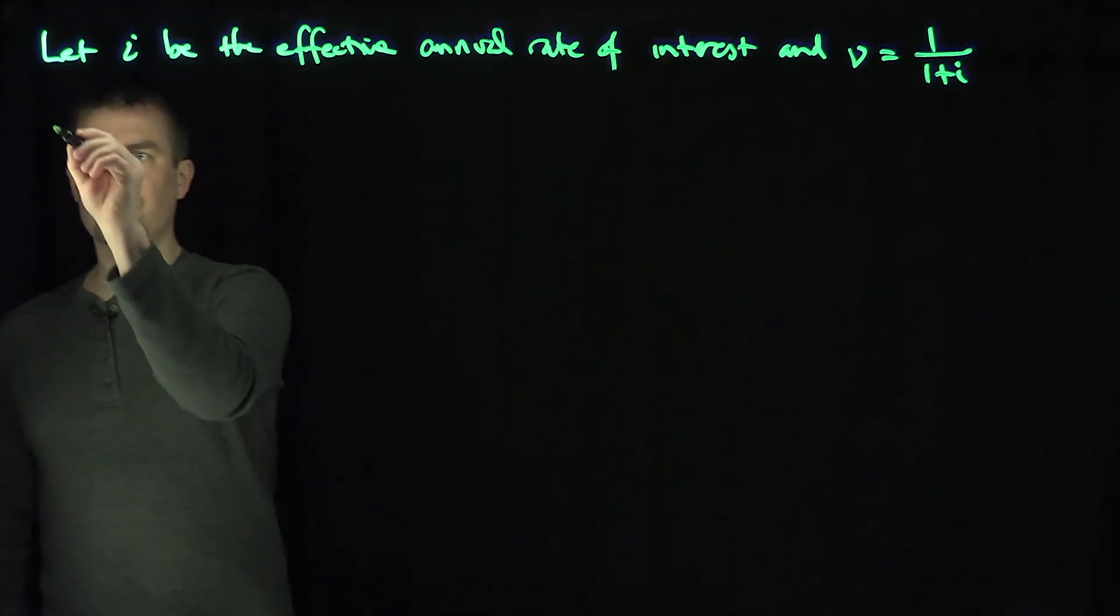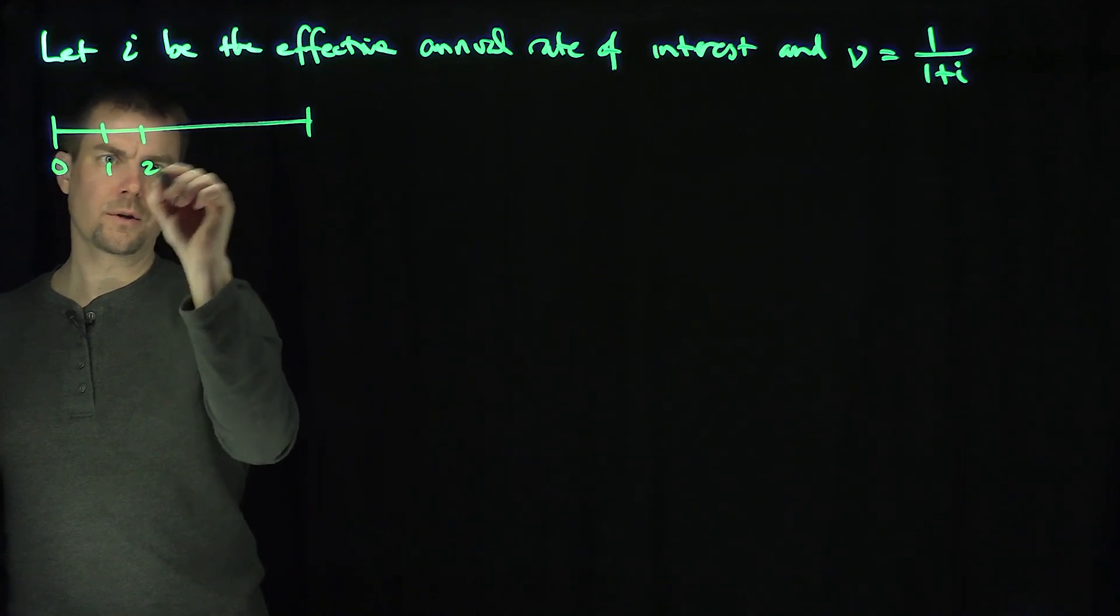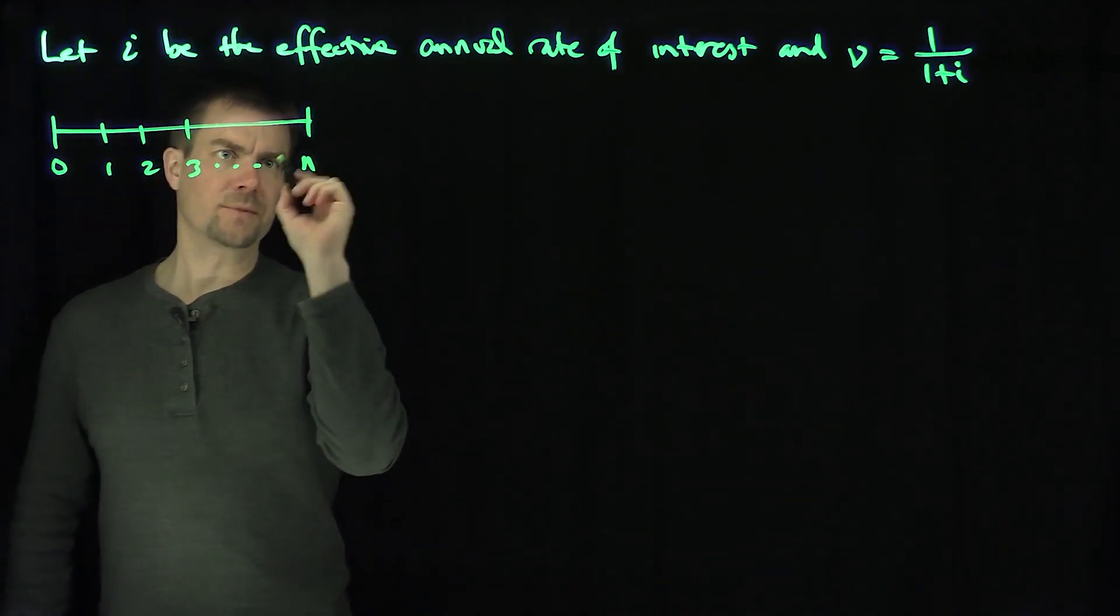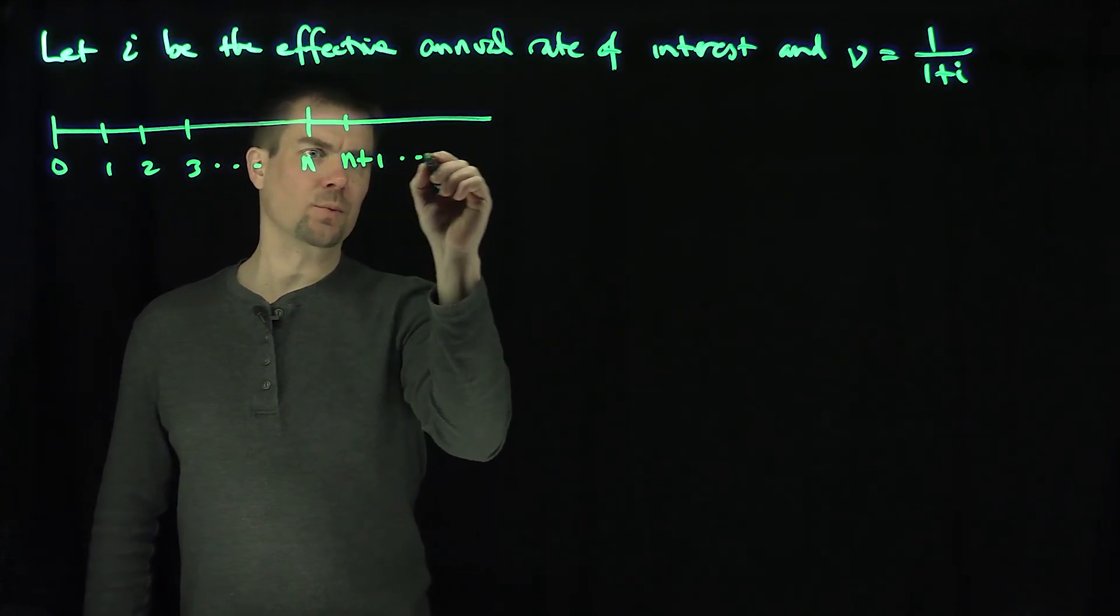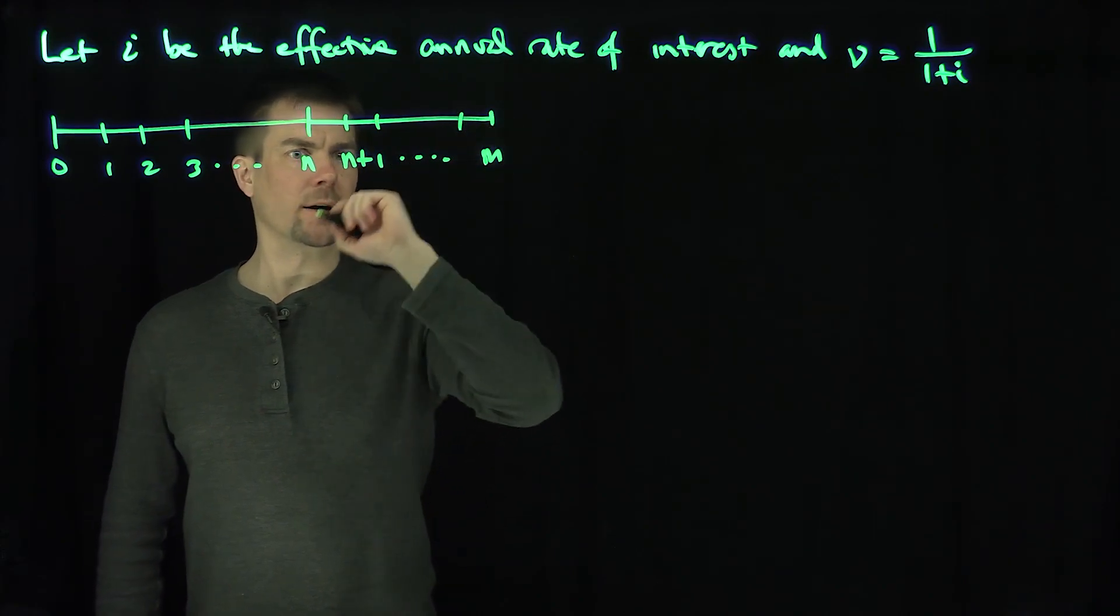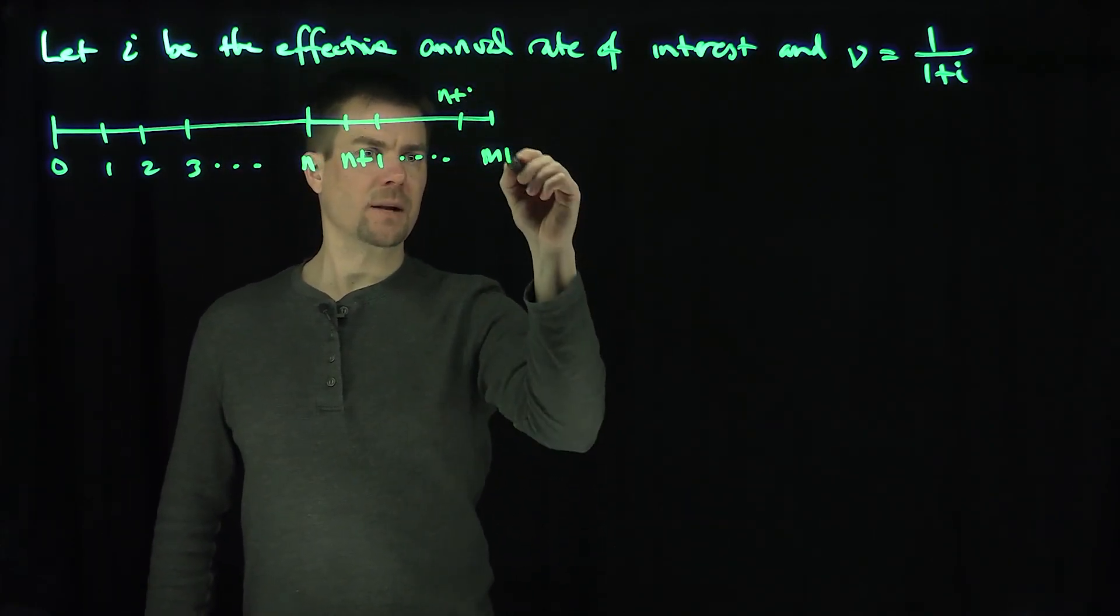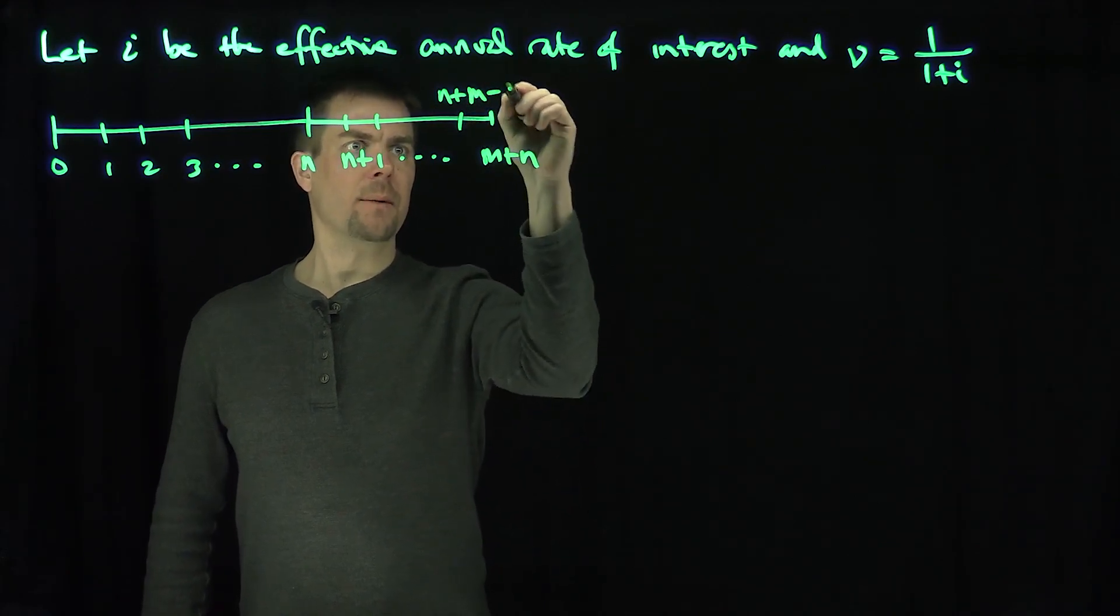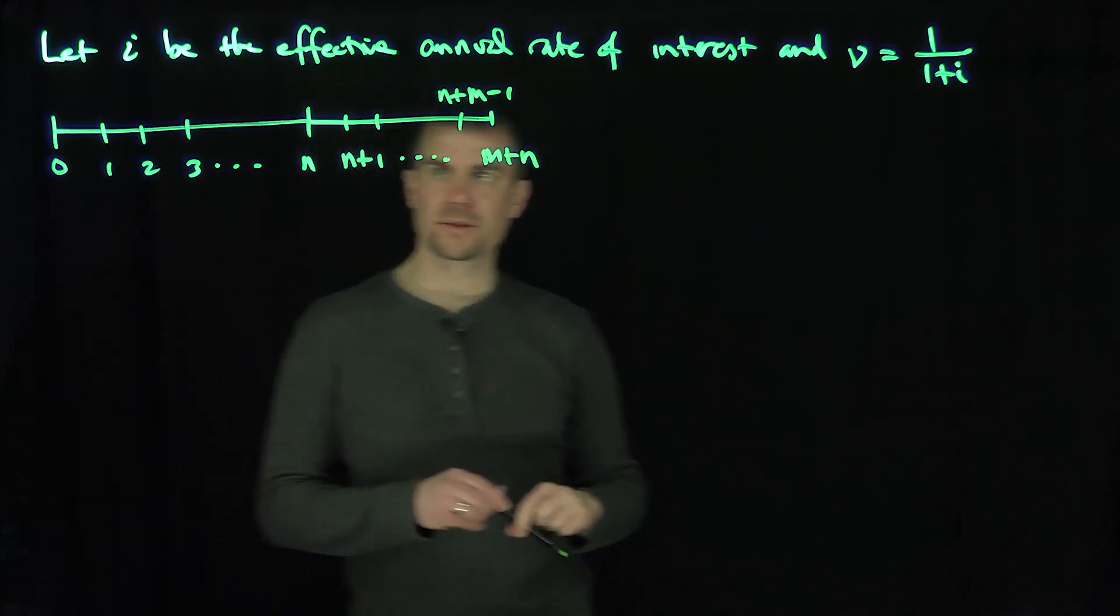Let's consider the following annuity. Our typical annuities go between 0, 1, 2, 3, up to n, and now I'm going to enlarge that to a time beyond time n, n plus 1 up to time m. So this point over here would be n plus m. We have a different time period past time n to consider.